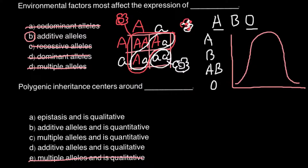We can cross out answer D, additive alleles and qualitative. We are left with two answers: additive alleles and quantitative, and answer C, multiple alleles and quantitative. As shown by the ABO blood group example, multiple alleles is an incorrect answer, so we cross it out. The only correct answer remaining is additive alleles and quantitative.